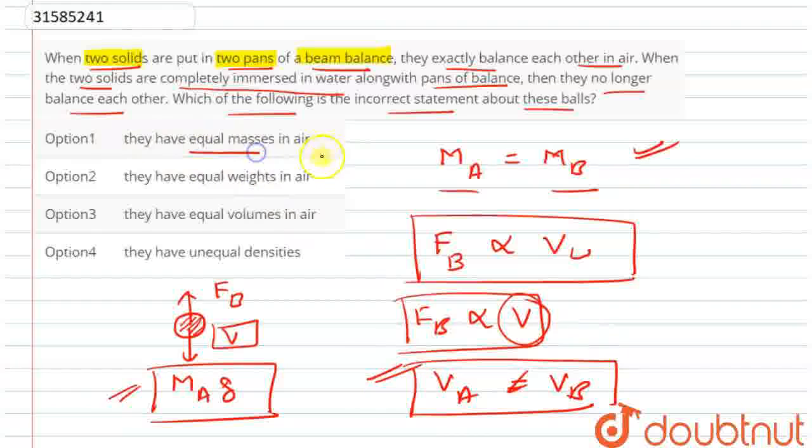Let's see here. They have equal masses in air. This is correct. We had to find incorrect. They have equal weights in air. This is correct because the weight in air is just m into g. The m is the same, the g is constant. So this is correct.